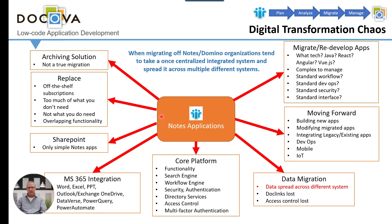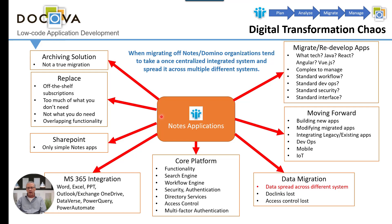I'm going to show you two slides here — Digital Transformation Chaos and the DocOva Solution — and you'll notice the arrows pointing out and then pointing in. Notes and Domino was a very powerful platform. In the past it was ahead of its time. It centralized and integrated applications in one place. It was powerful and it was rapid application development — very effective. But unfortunately it's decayed, and companies have let it decay. New people don't know about it. So it's time to leave.